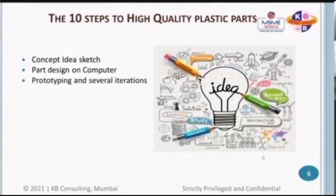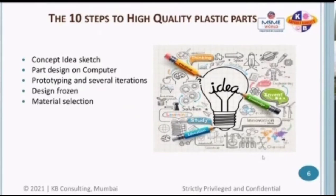You create a 3D model using different software like AutoCAD, SolidWorks, and PRO-E to create 3D versions of the concept idea sketch. Then you do prototyping — you can use CNC prototyping or 3D printing to create prototypes and see the functionality. After several iterations of prototyping and design changes, when the design is fixed and final, the design is frozen.